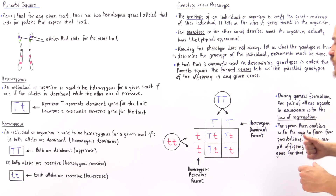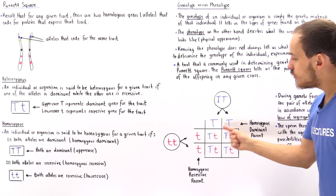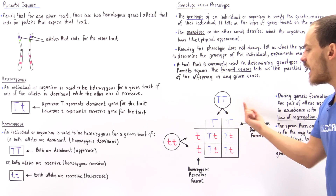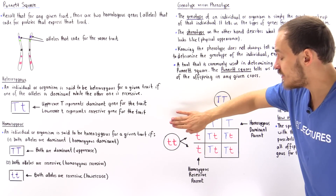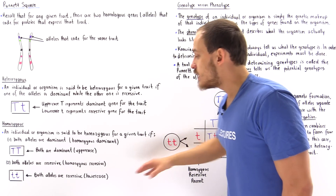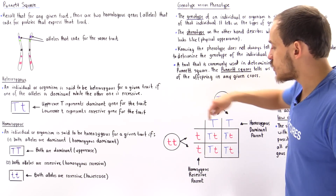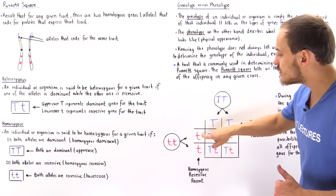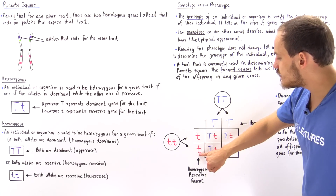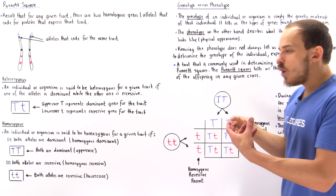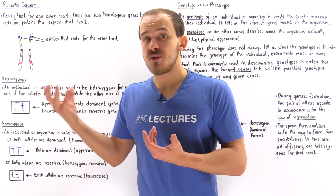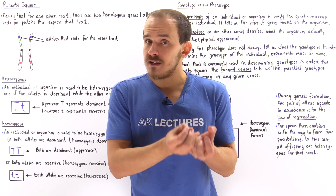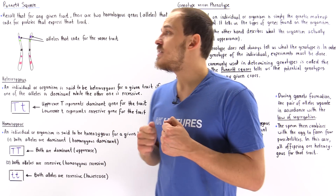This is how we show it in the Punnett square. We have one T in its own compartment and the second T in its own compartment for parent one. The same is true for the homozygous recessive parent — we have lowercase t and lowercase t. When fertilization takes place to form the offspring or zygote, the two cells fuse to form a single diploid cell.